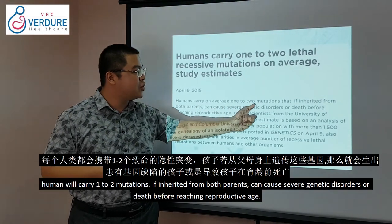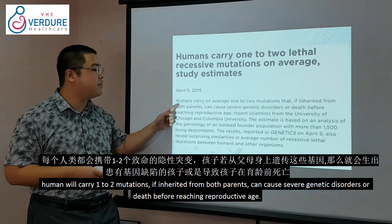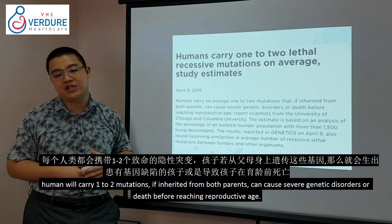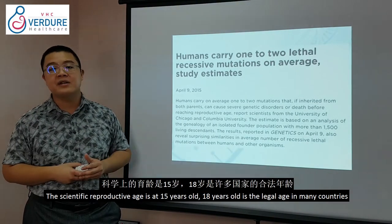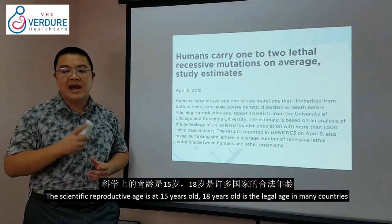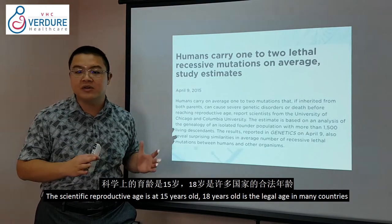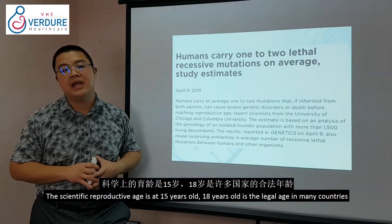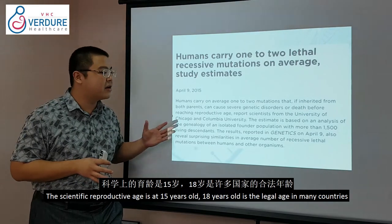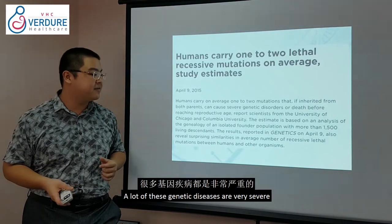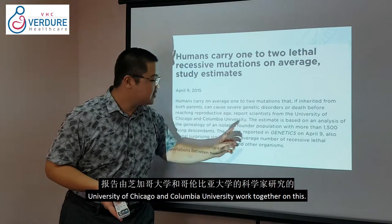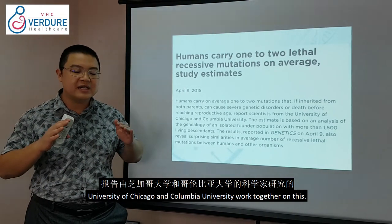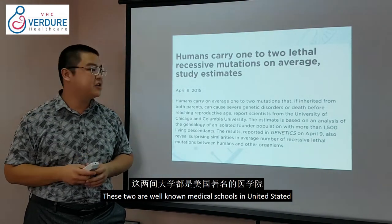On average, humans carry 1–2 mutations that, if inherited from both parents, can cause severe genetic disorder or death before reaching reproductive age — which biologically is around 15 years old. The University of Chicago worked along with Columbia University — two top US universities — on this research.